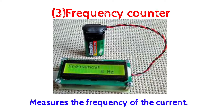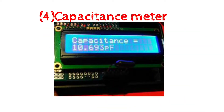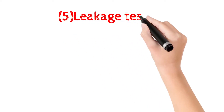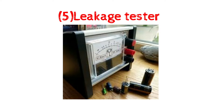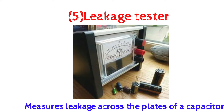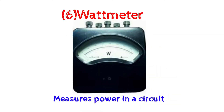...the frequency of the current. 4. Capacitance meter: measures the capacitance of a component. 5. Leakage tester: measures leakage across the plates of a capacitor. 6. Watt meter: measures power in a circuit.